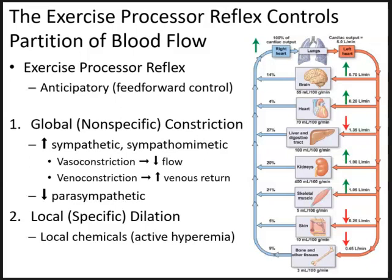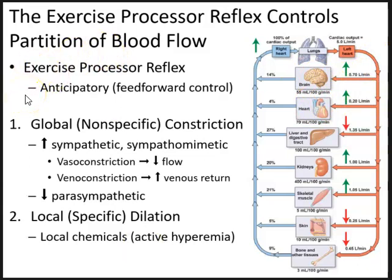Blood will be partitioned to skeletal muscle in response to exercise and to other organs that need increased blood flow, such as the brain, heart, and kidneys. Meanwhile, cardiac output will decrease to other organs that don't need it during exercise. This is the exercise pressor reflex — a non-specific constriction globally or systemically, followed by a more localized specific dilation causing active hyperemia.